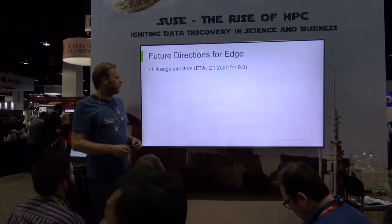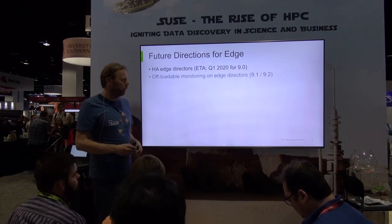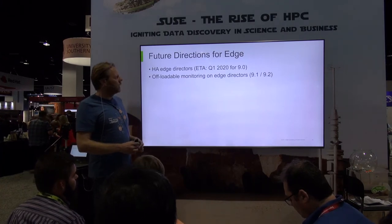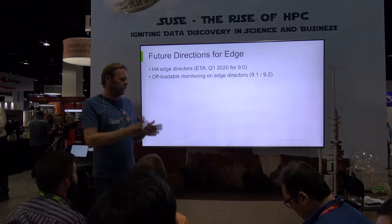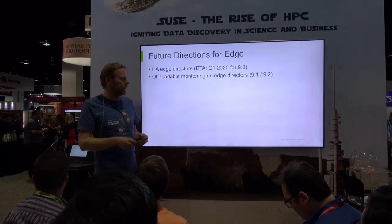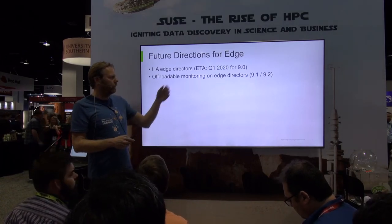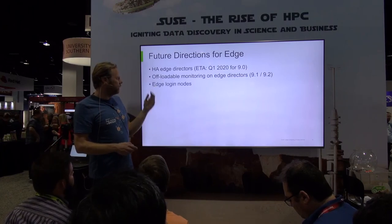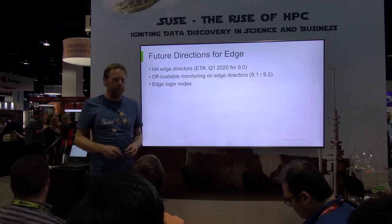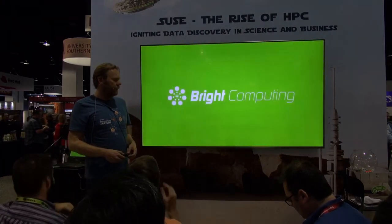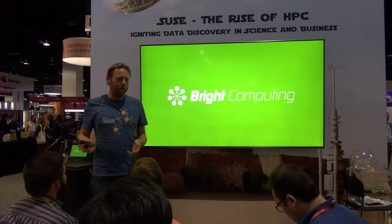Some future directions: we're working on HA capabilities for edge directors, coming in Q1 as an update for Bright 9.0. We'll make monitoring offloadable for edge sites so the core cluster is no longer needed to store all monitoring data, reducing bandwidth requirements further — coming in 9.1 and 9.2. We're also working on adding edge login nodes to your cluster more seamlessly. Thank you for attending — if you have any questions, feel free to ask now or come find me after the show.